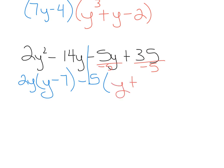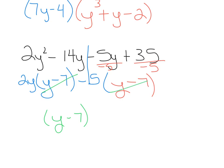For the back two terms, we're factoring out negative 5 because of the negative sign brought down. Dividing by negative 5: the first term gives y, and the second term gives negative 7. You can check this: negative 5 times y is −5y, and negative 5 times negative 7 is positive 35. Now we notice that y − 7 is common in both groups. So we pull out y − 7 as the big GCF, and what's left in the second parentheses is y − 5.